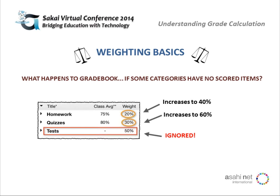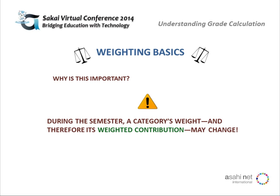What that could mean is that a student might have done well on some homework and quiz items, and their course grade looks really great — homework is now worth 40% and quizzes worth 60%. But then the minute that person gets a score in the test category, those weights decrease for homework and quizzes and the course grade might be dramatically different. That's the important thing to remember when using weighted categories: during the semester, a category's weight and therefore its weighted contribution to the course grade may change.